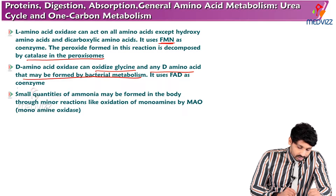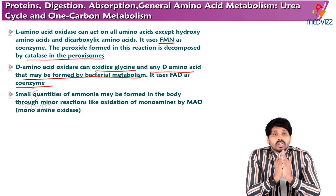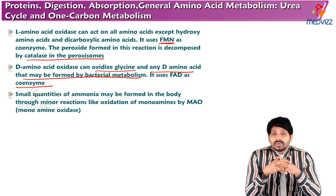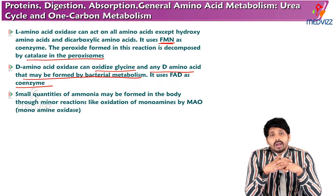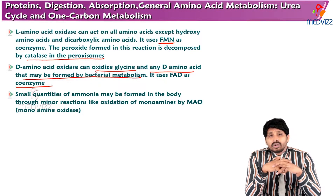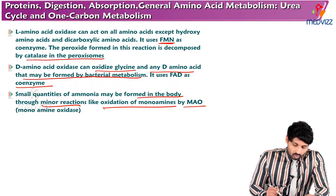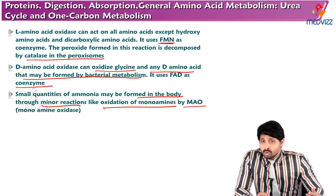D-amino acid oxidase can oxidize glycine and any D-amino acid that may be formed by bacterial metabolism; it uses FAD as coenzyme. Our body proteins contain L-amino acids, but D-amino acids can also be present in the diet from plant sources and from bacterial metabolism, and they are metabolized by D-amino acid oxidase.